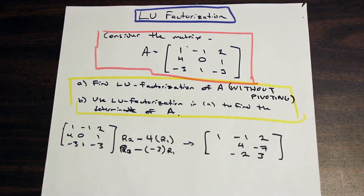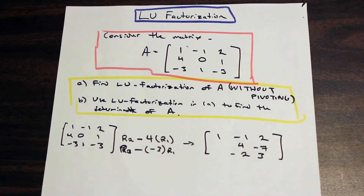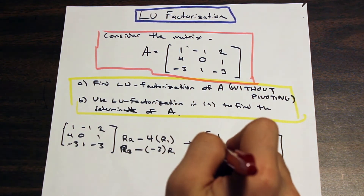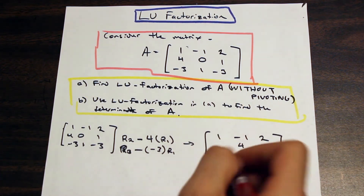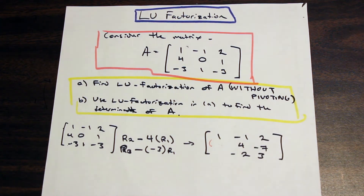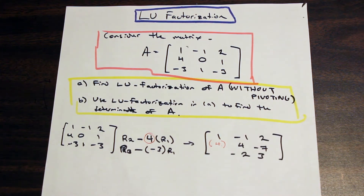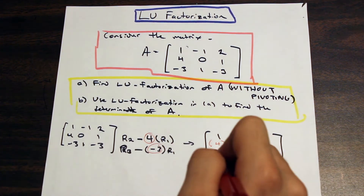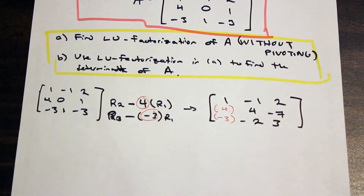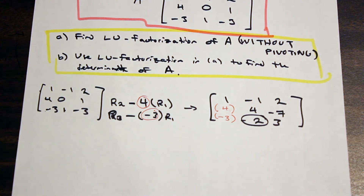The difference between normal row reduction and LU factorization is that we retain these factors. The values used — 4 and negative 3 — are zeros in the current matrix, so I'll write them in a different color in brackets as placeholders. These are not numbers in the matrix; they'll be used later to form our L matrix. Now we need to make the remaining lower-left entry, negative 2, equal to zero.